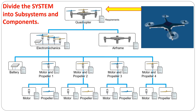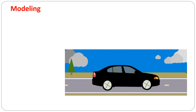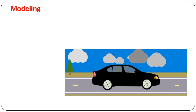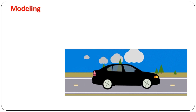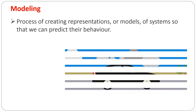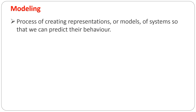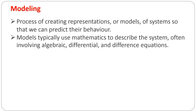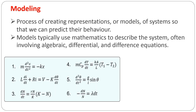First, let's explain what we mean by these terms in the context of this program. Our lives revolve around dynamic systems that change over time — buildings fluctuate in temperature throughout the day, vehicles change position toward their destination, and computers change voltages to process information. Modeling is the process of creating representations, or models, of such systems so that we can predict their behavior. Models typically use mathematics to describe the system, often involving algebraic, differential, and difference equations.